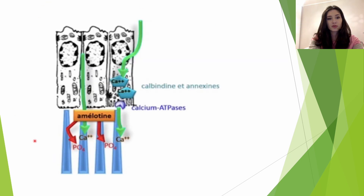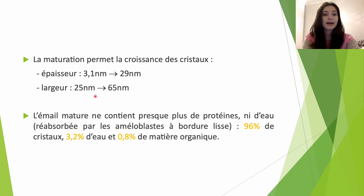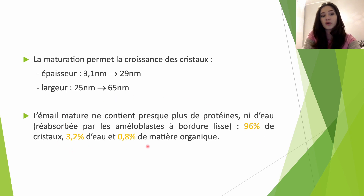Le calcium passe entre deux cellules à aspect lisse via un transport passif, et à droite on voit le calcium passer de façon active grâce aux protéines et à la calcium-ATPase au niveau des bordures plissées. Une fois qu'on aura un apport suffisant en ions calcium et en ions phosphate, les cristaux vont pouvoir croître en largeur et en épaisseur : l'épaisseur passe de 3,1 nanomètres à 29 nanomètres et la largeur de 25 nanomètres à 65 nanomètres. L'émail mature ne contient presque plus de protéines ni d'eau ; on se retrouve avec 96 % de cristaux, 3,2 % d'eau et seulement 0,8 % de matière organique.